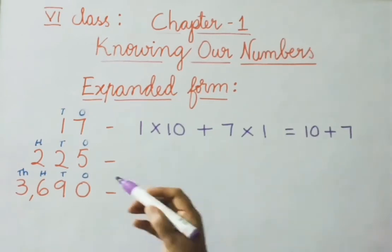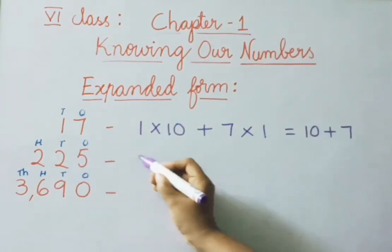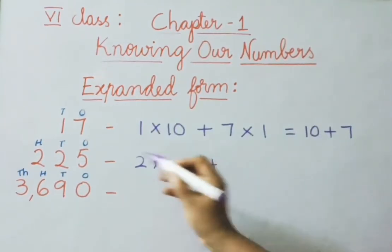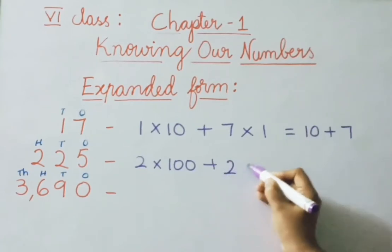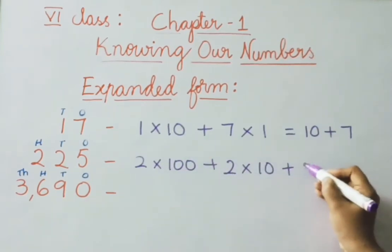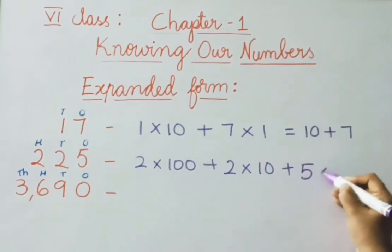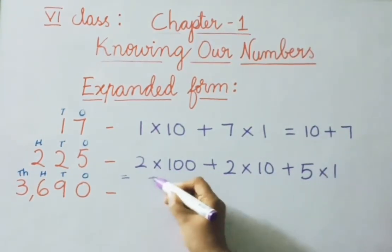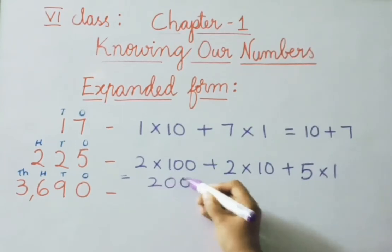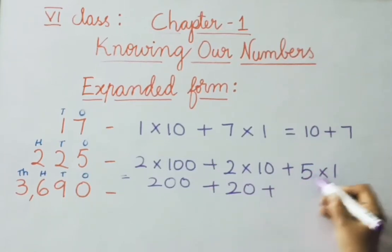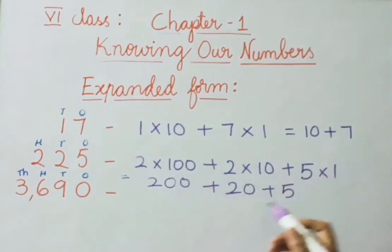See the next example: 225. Hundreds place digit is 2, so 2 × 100. Plus tens place digit is 2, so 2 × 10. Plus ones place digit is 5, so 5 × 1. The answer is 2 × 100 = 200, plus 2 × 10 = 20, plus 5 × 1 = 5. So 225 in expanded form is 200 + 20 + 5.